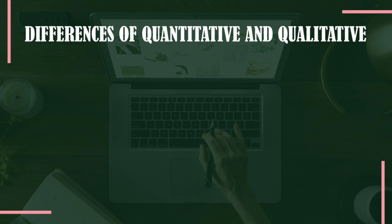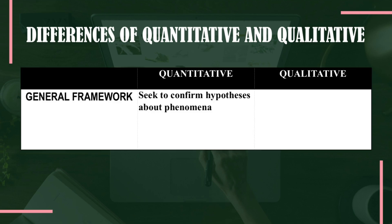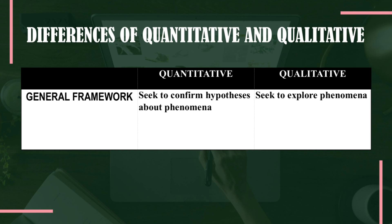First, we will delve into the general framework. Quantitative research seeks to confirm hypotheses about phenomena. On the other hand, qualitative research seeks to explore phenomena. As you can observe in a qualitative research paper, there is no hypothesis made by the researchers. However, in quantitative research, there is a part in which you need to write the hypothesis of the study, specifically the null hypothesis.